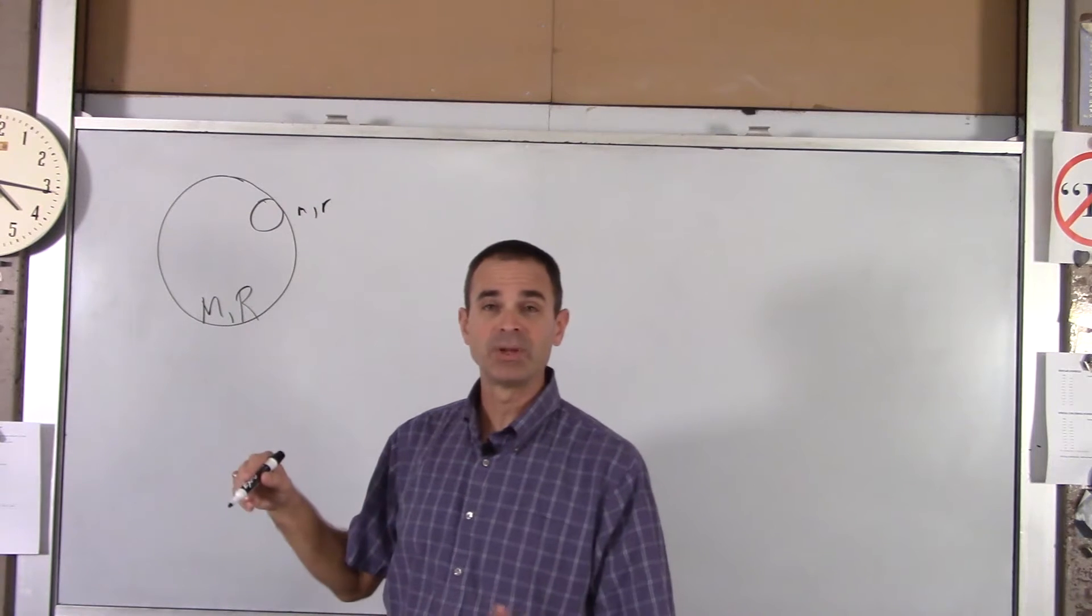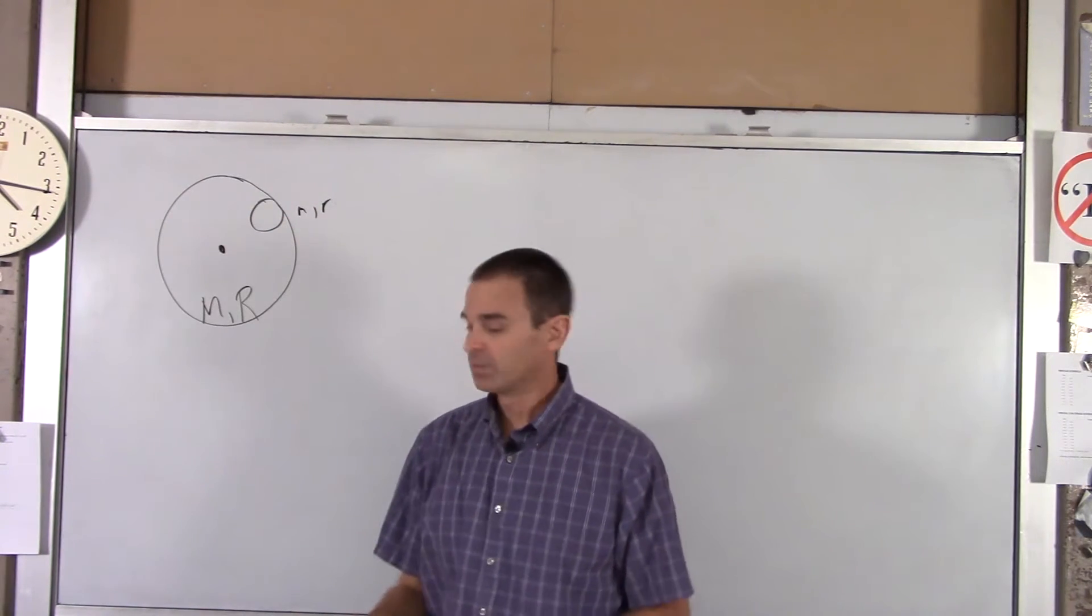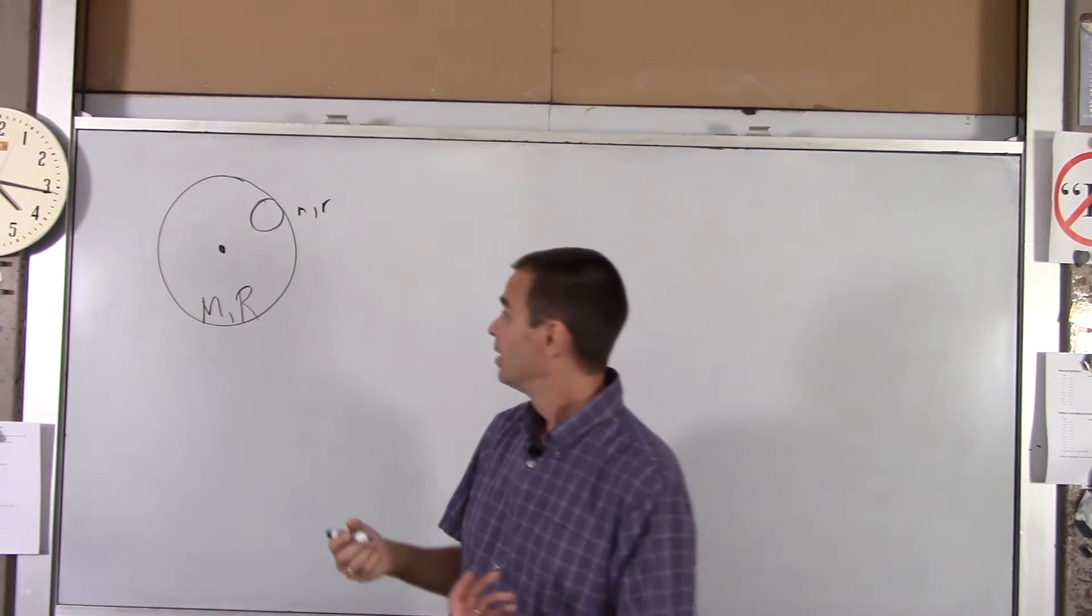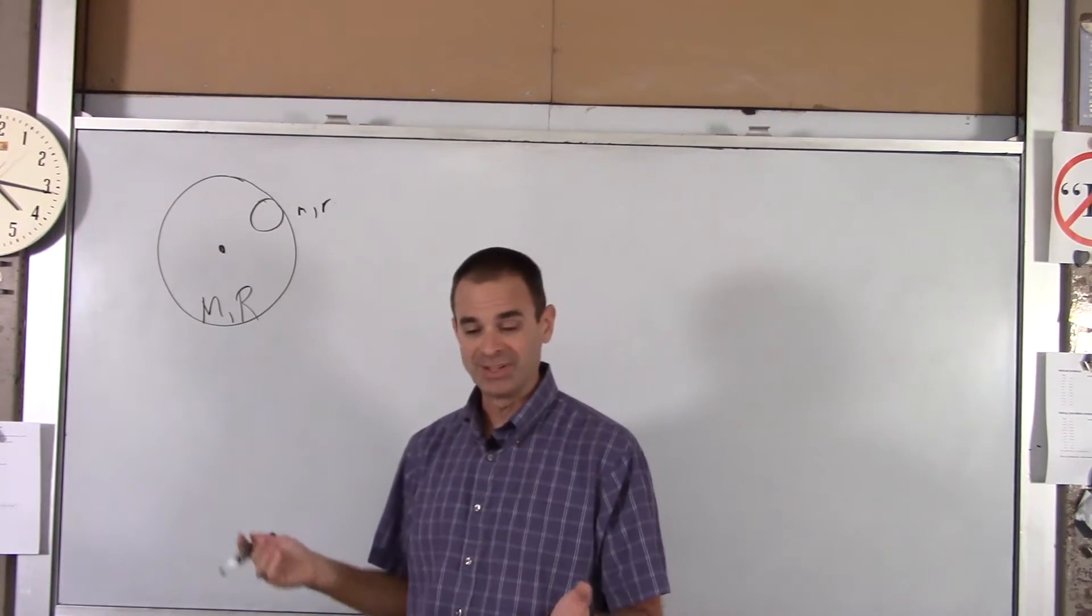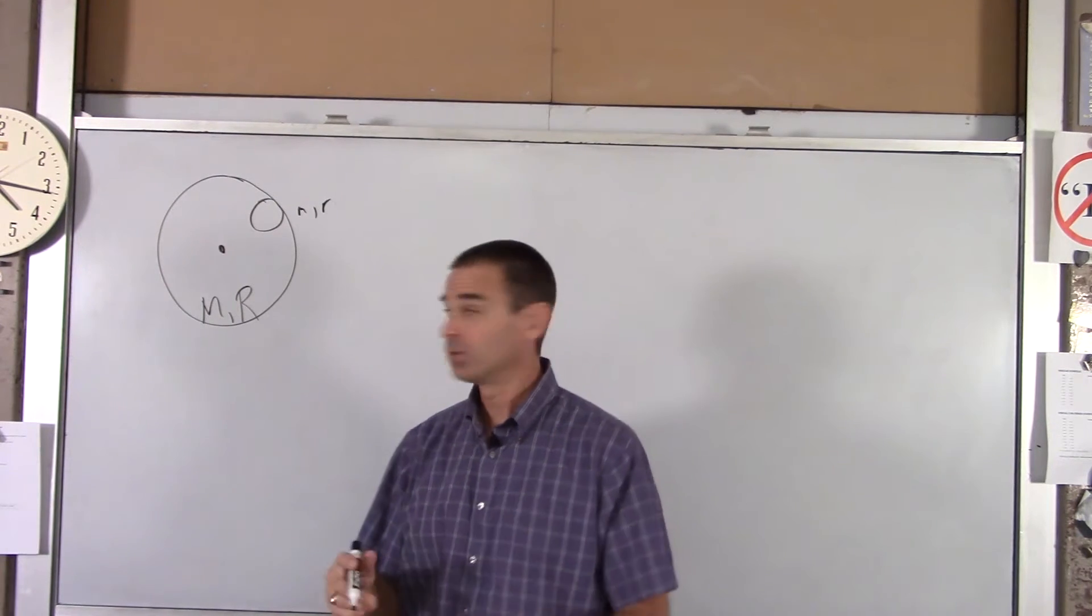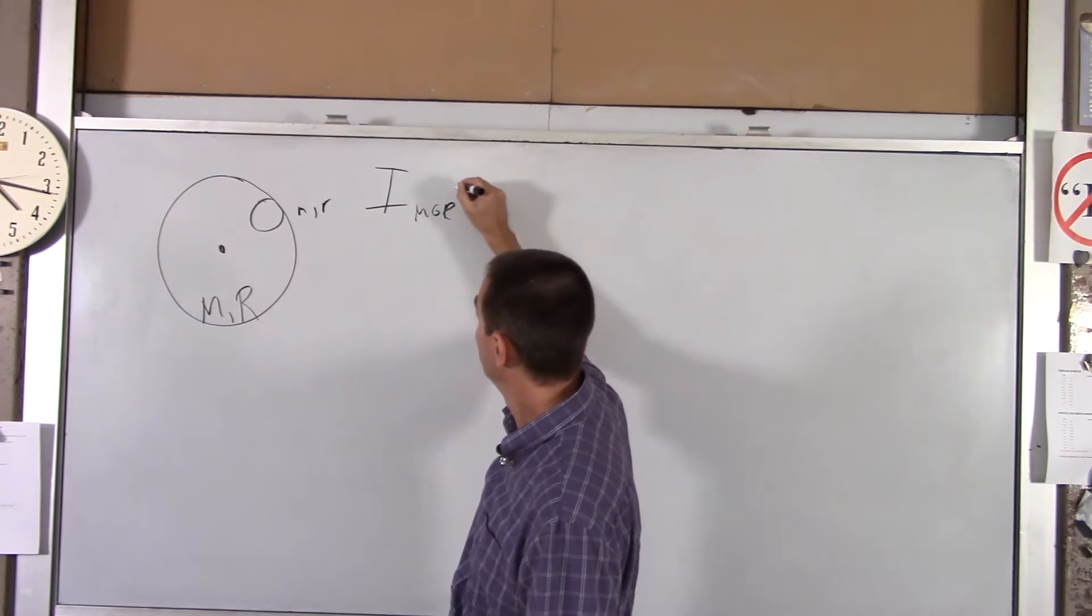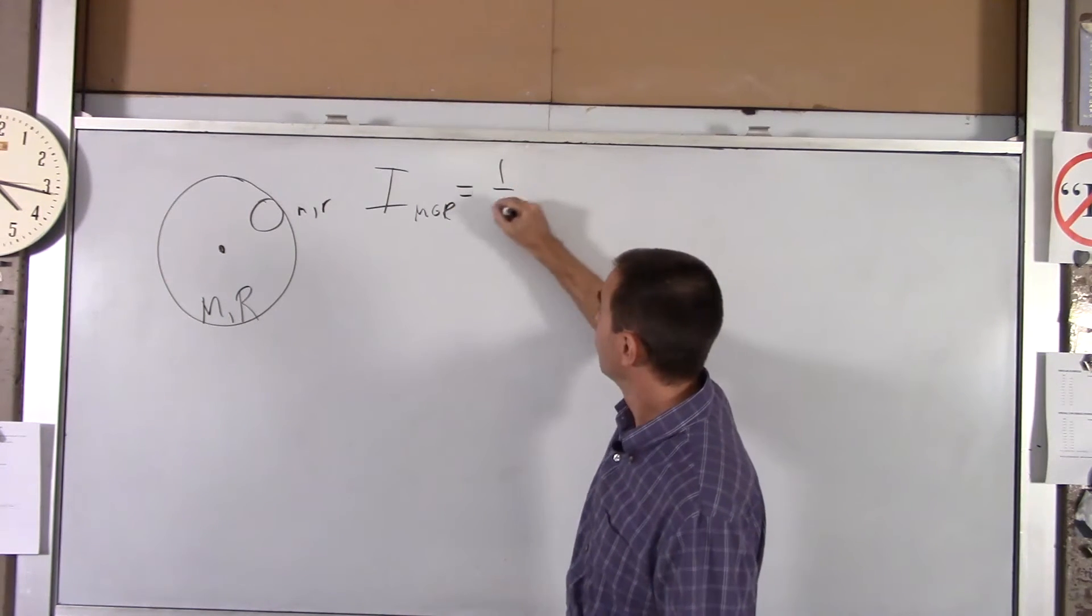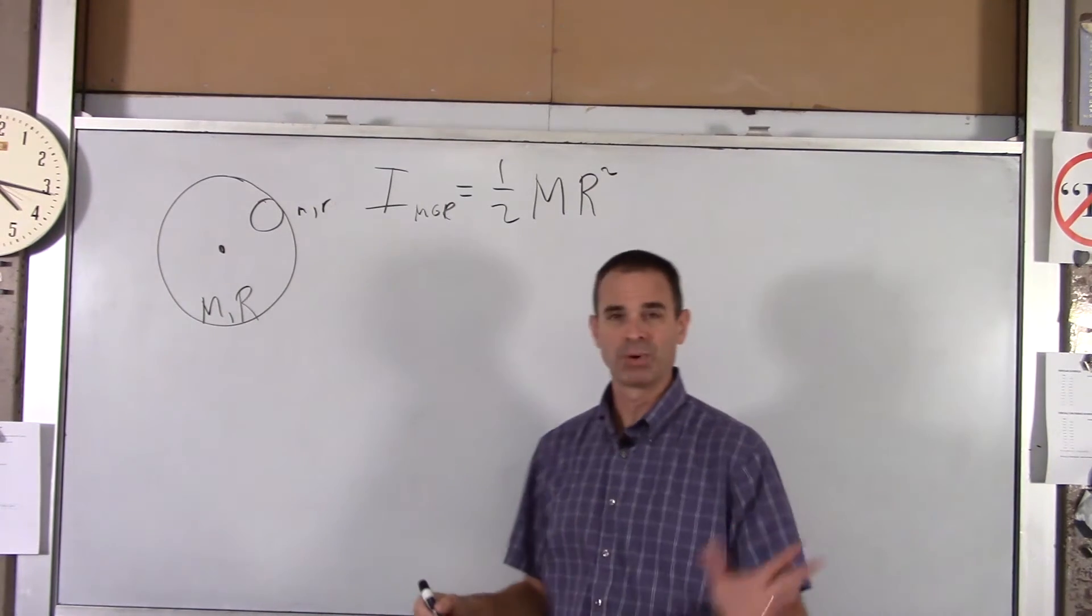And we want to find the moment of inertia about the center of the merry-go-round. So what's the moment of inertia of our system? Well, we've got two parts. We have the merry-go-round. That's really simple. It's a solid disk. So the moment of inertia of the merry-go-round is one-half M big R squared. So no problems there.